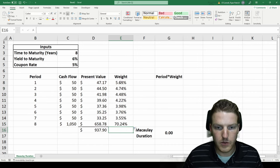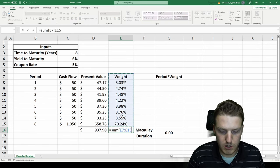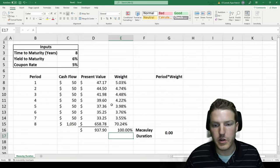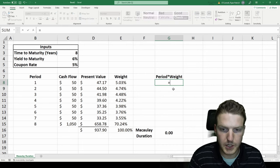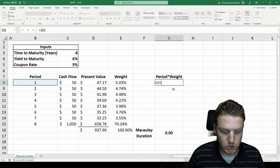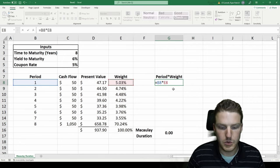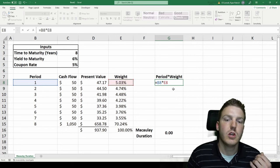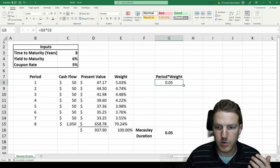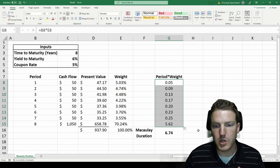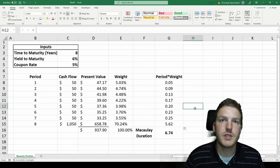And you'll see if I sum all of these, it will be equal to 100%. Now, in order to find the Macaulay duration, we just simply take the period, so how many years out is this cash flow, multiplied by what weight does it contribute to the actual present value. Then if we pull all of these down, we'll see that the Macaulay duration is actually 6.74,